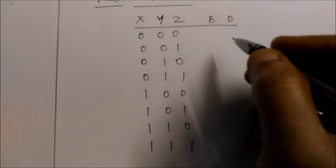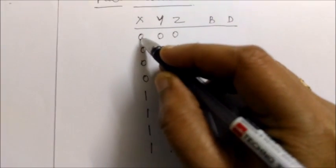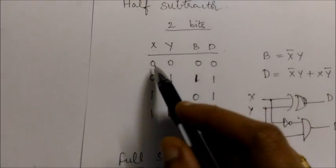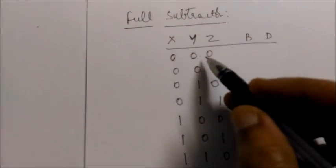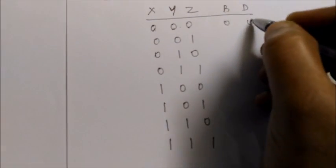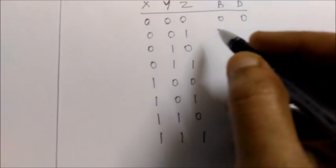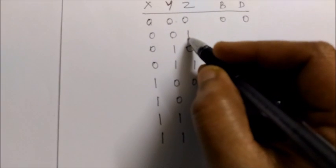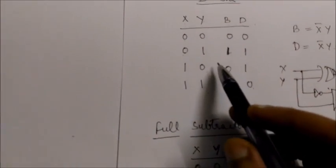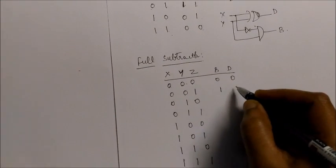Now let us write the output. For 0 minus 0 minus 0: we consider 0 minus 0 as in a half subtractor, giving difference 0, borrow 0. Then subtracting z=0 gives difference 0, borrow 0. For 0 minus 0 minus 1, it is like 0 minus 1: in the half subtractor, borrow is 1 and difference is 1, so we get difference 1, borrow 1.